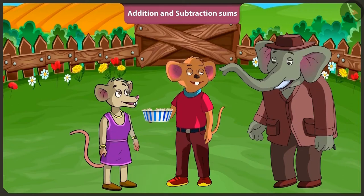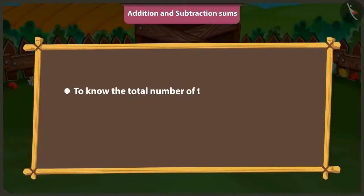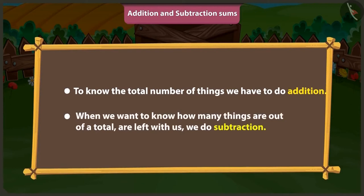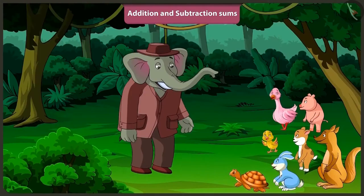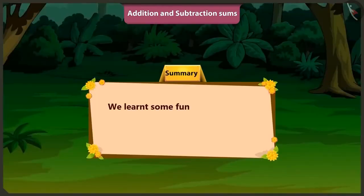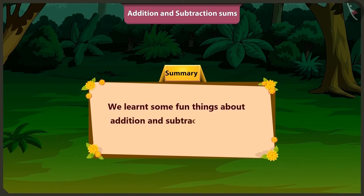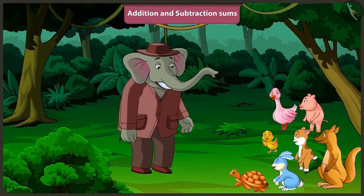Children, now you would have understood when to do addition and when to do subtraction. When we have to know the total number of things, we do addition. And when we have to know how many things are left from the total, we do subtraction. Well done, children. Now you both play and I will go. Bye Uncle. Friends, today we learned some interesting things related to addition and subtraction of two-digit numbers. In the next video, we will learn about tracing of things in our surroundings.